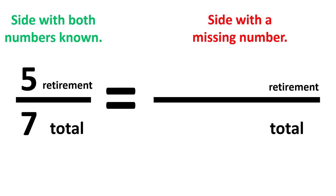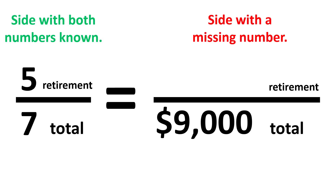The other side contains the missing number. We're told his total investment money — that goes in the denominator. We use the letter X to represent the missing number. In this problem, it's the amount of money to invest in a retirement account. The X always goes on the right side of the equal sign.